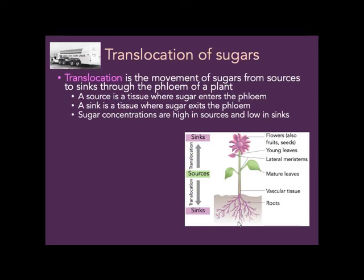That was the first half of the chapter, covering transpiration — the movement of water. The second half deals with translocation of sugars — the movement of sugars from the source to the sink through the phloem. The source is where the sugar is made and enters the phloem; the sink is where sugar is being used and exits the phloem. A source tissue is very high in sugar concentration; a sink tissue is very low.